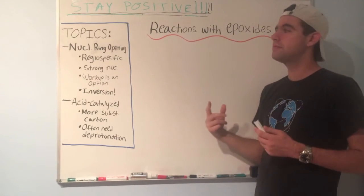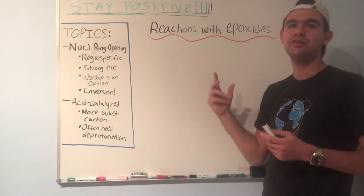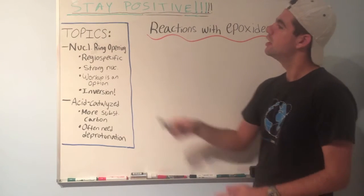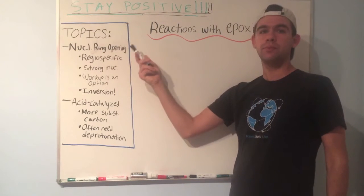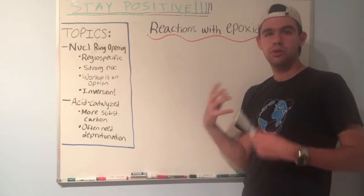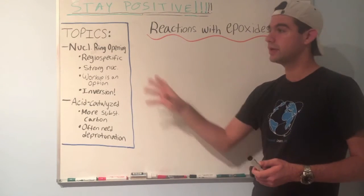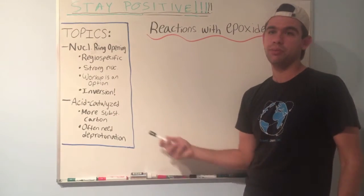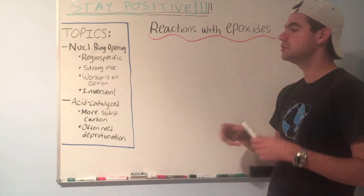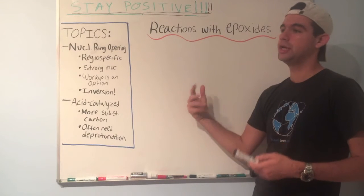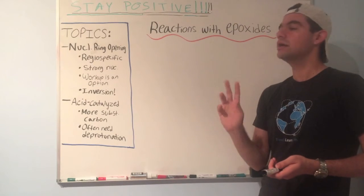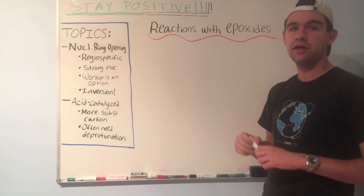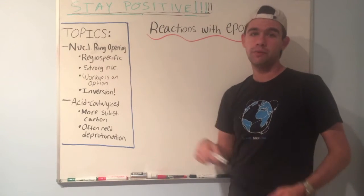There are two categories of reactions with epoxides that you'll probably be responsible for in your OCHEM course. The first category is nucleophilic ring opening — that involves using a strong nucleophile to open the epoxide. The second category is acid-catalyzed ring opening, which involves using acid, protonating the oxygen, and then attacking with a relatively weaker nucleophile.